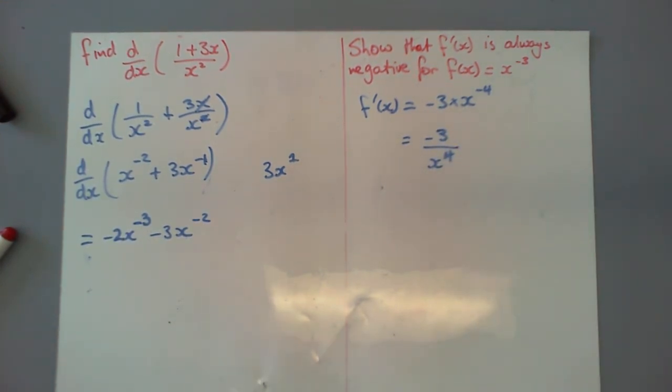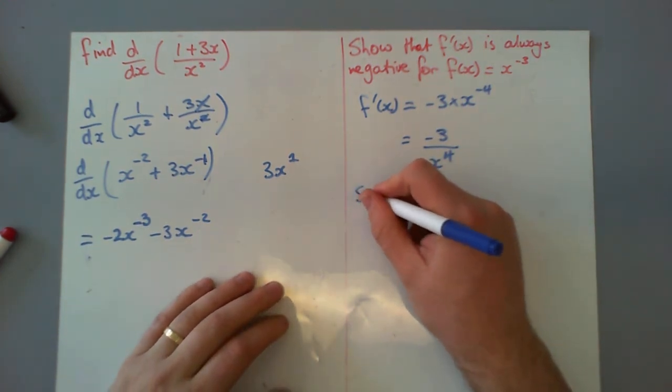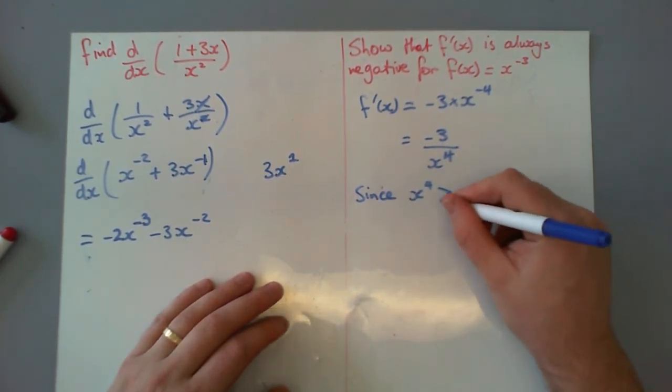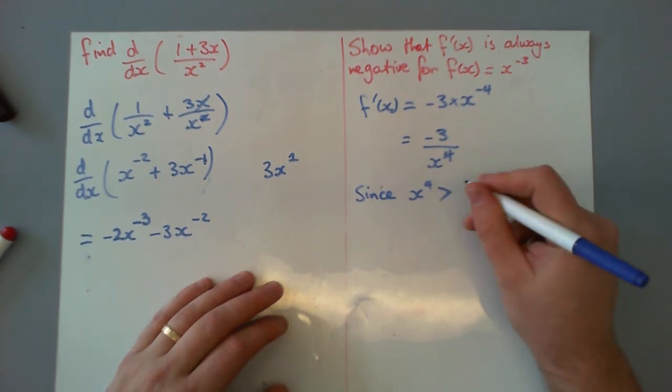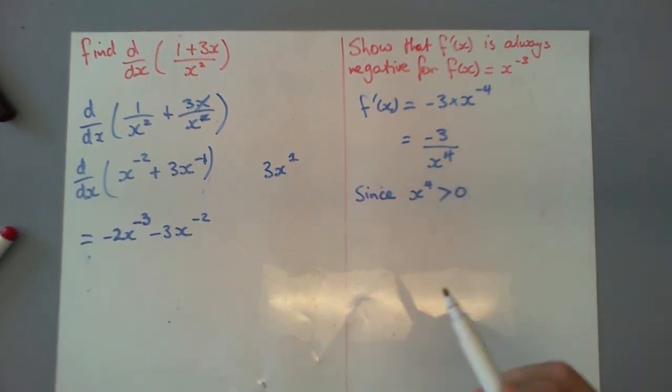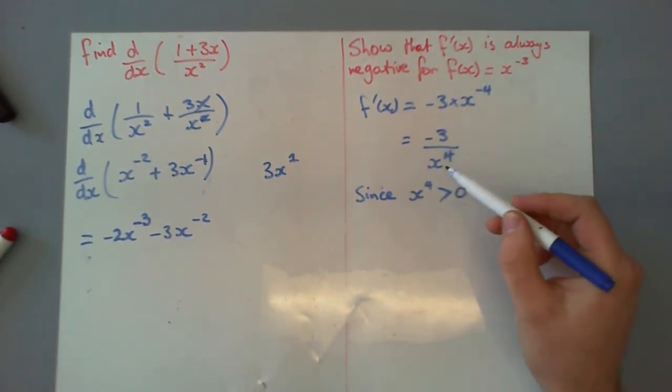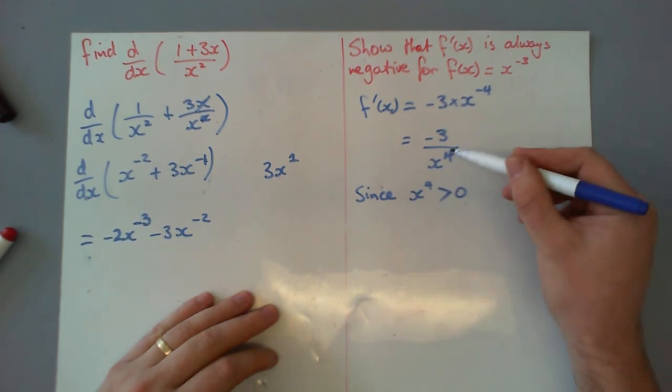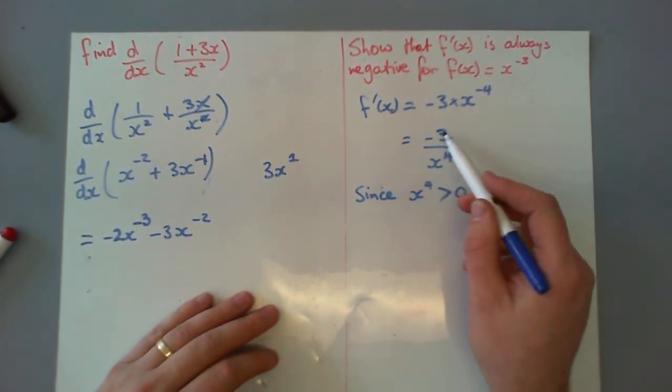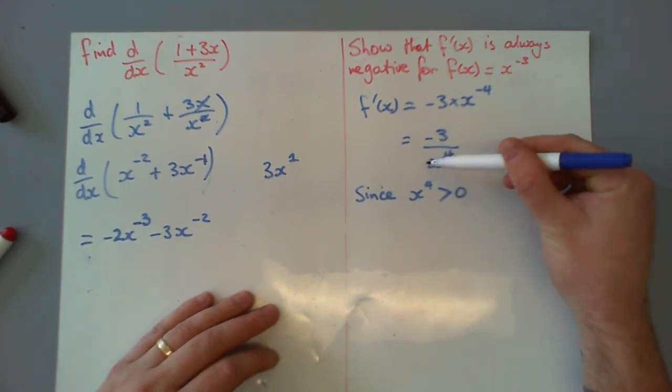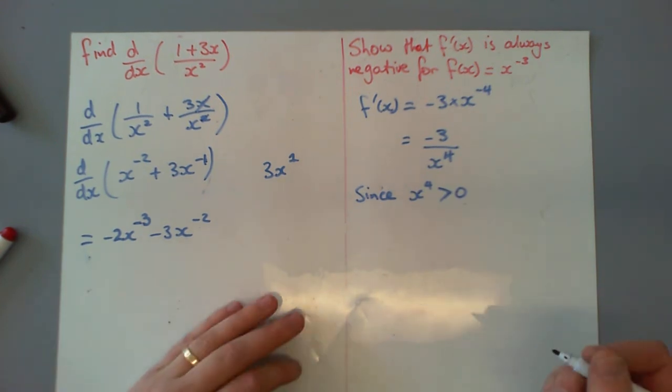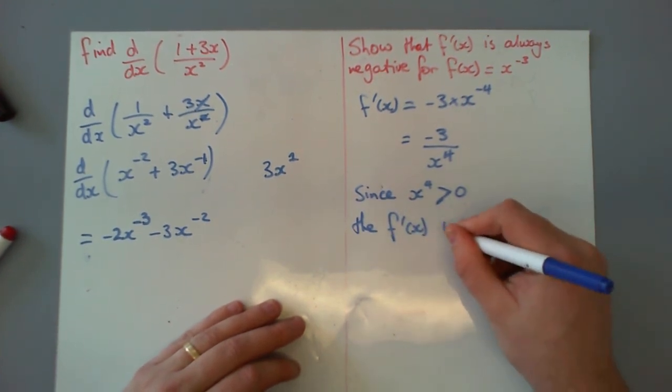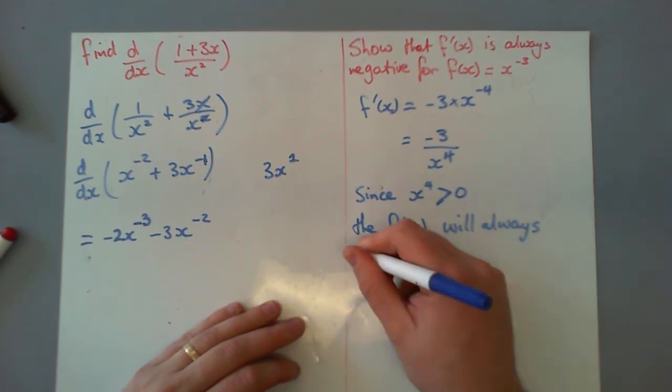So how are we going to show that this is always negative? Well, we can say since x to the power of 4 is always going to spit out values that are positive, bigger than zero, because if we put a negative in here, it's going to spit out a positive value. If we put in a positive value, it's of course still going to give us a positive value. Well, so we know our denominator is always positive, our numerator is always negative. So that means that when we divide this negative by this positive all the time, we're always going to get a negative number. So since this is always positive, then f dash of x will always be negative.